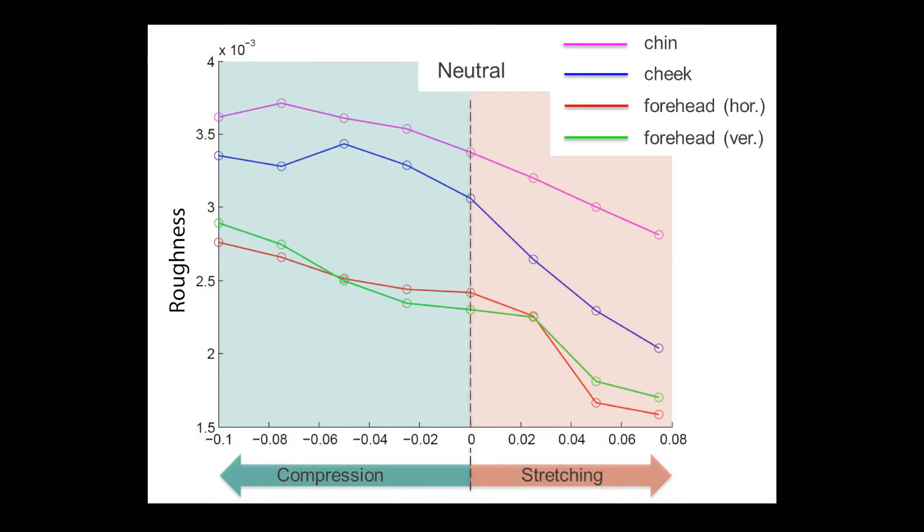Graphing this data, we see that skin becomes shinier when it's stretched and rougher when it's compressed.